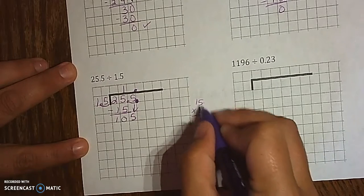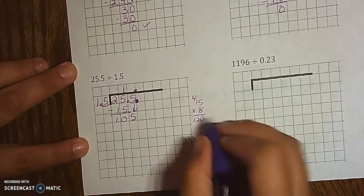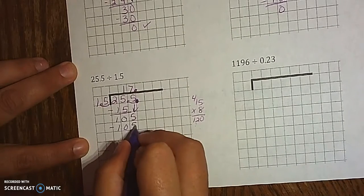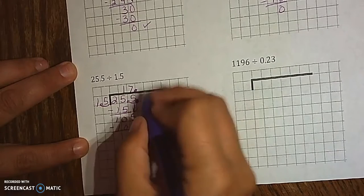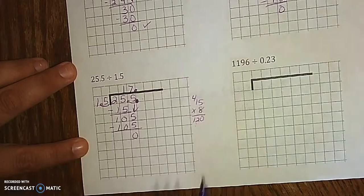Well, 5 times 8 is 40. That's 8 plus 4 is 12. I'm just a little over, so it's going to be a 7, which is 105. 5, 0, and I don't have anything to bring down here,